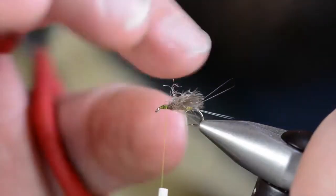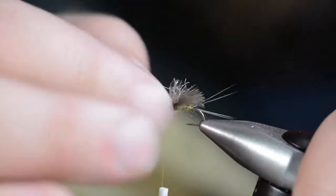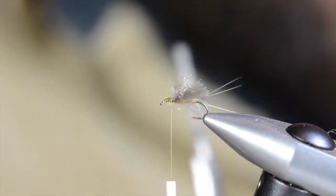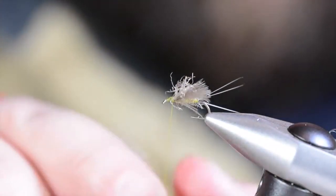Use that thread to reinforce the zelon to where I want it. Then I'm just going to add a touch more dubbing on the head to cover up my thread.